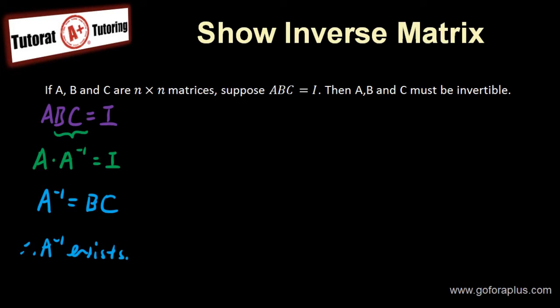Now I have to show that C inverse exists. Same thing here. You have ABC equals to I. So I group this as my C inverse. So this is C inverse times C equals to I. So C inverse must be equal to A times B. Therefore, C inverse exists.